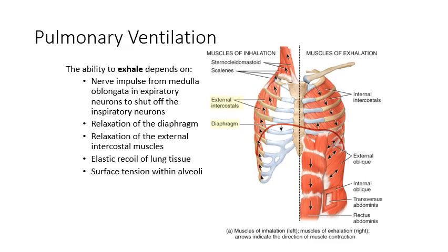If we want to exhale, we need to cancel the nerve impulse coming from the medulla oblongata so that we stop the contraction of the diaphragm and stop the contraction of the external intercostals — so both of those muscle groups relax. We need the lungs to have some elastic recoil, which means they're going to return to their original shape after they've expanded, and we still need that surface tension in the alveoli.